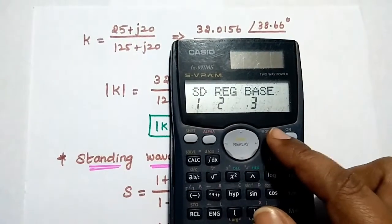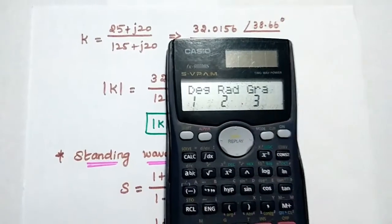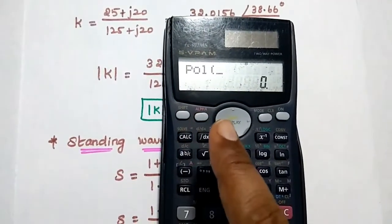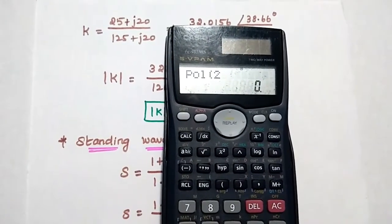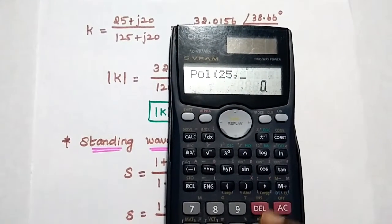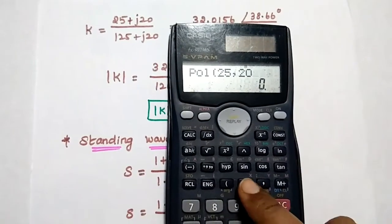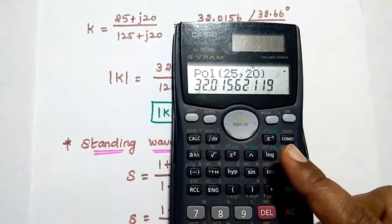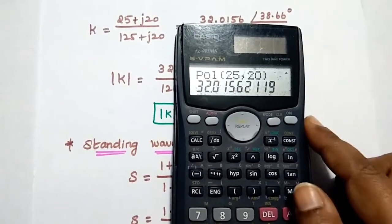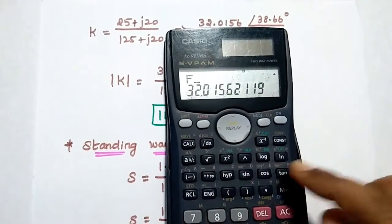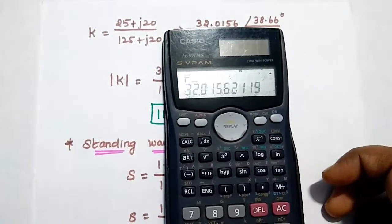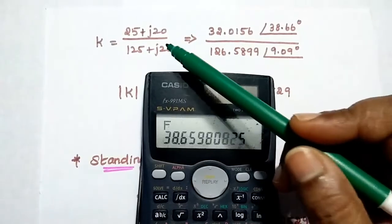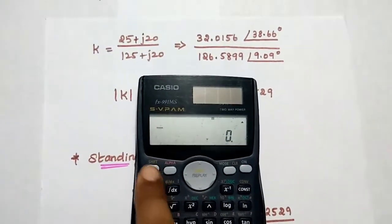The calculator mode should be in degree mode — press mode and select degree (1). Then press shift and the plus symbol to access polar coordinates. Enter the real term 25, then press comma and enter the imaginary term 20. Close the bracket and press equal. We get the magnitude as 32.0156. To get the phase, press alpha and then the angle symbol (F), then press equal. The phase value is 38.66 degrees. This is the polar form of the numerator.